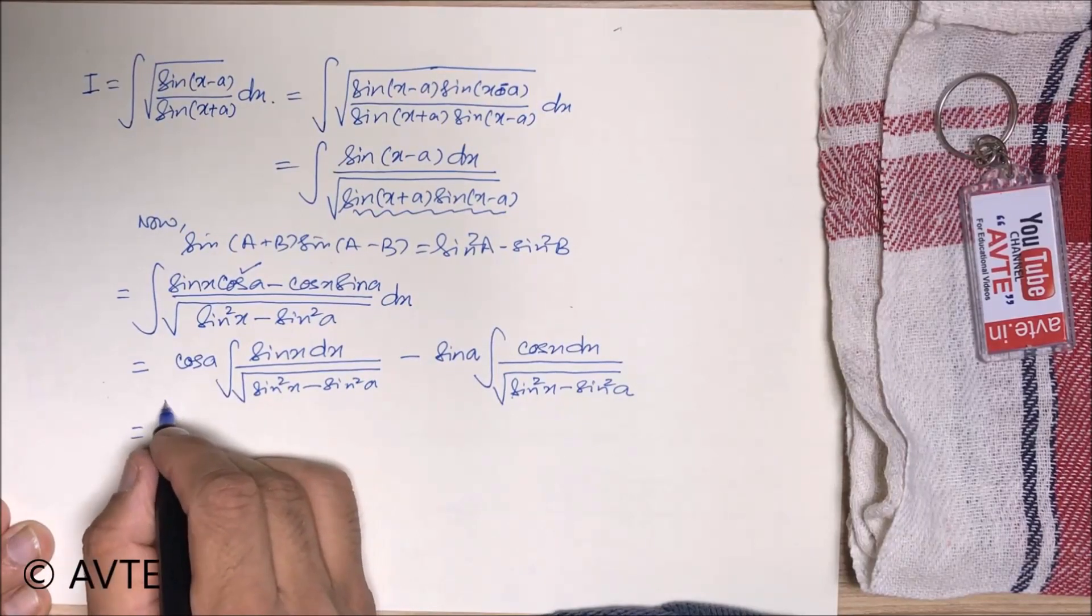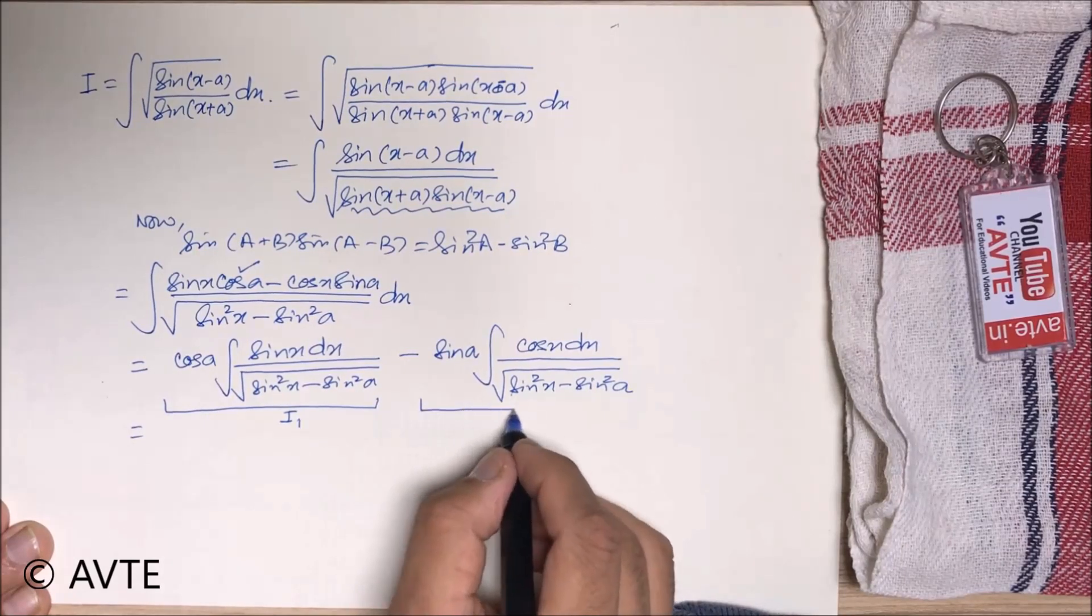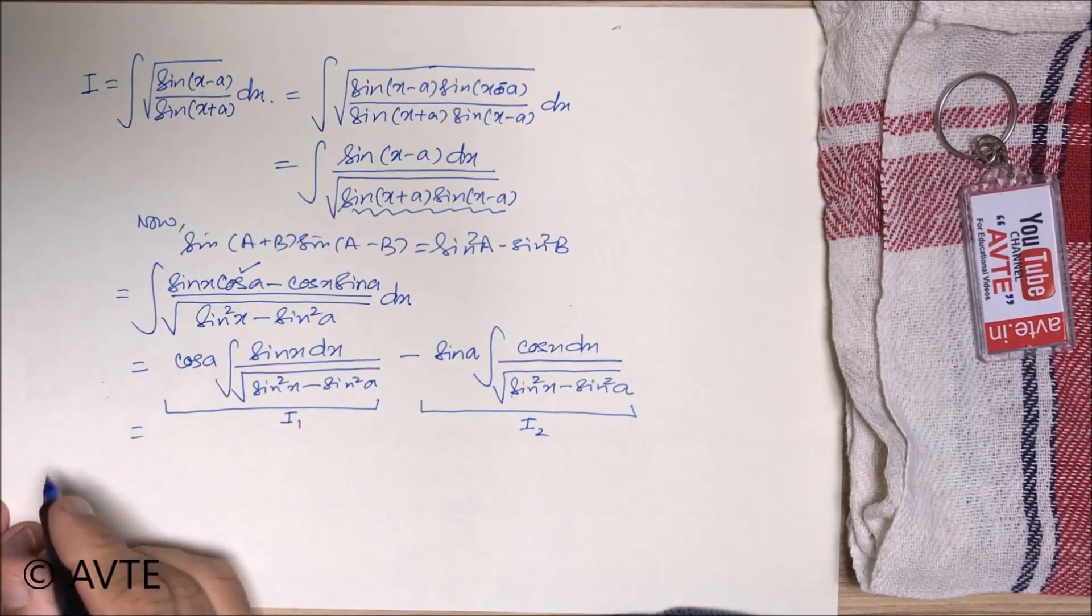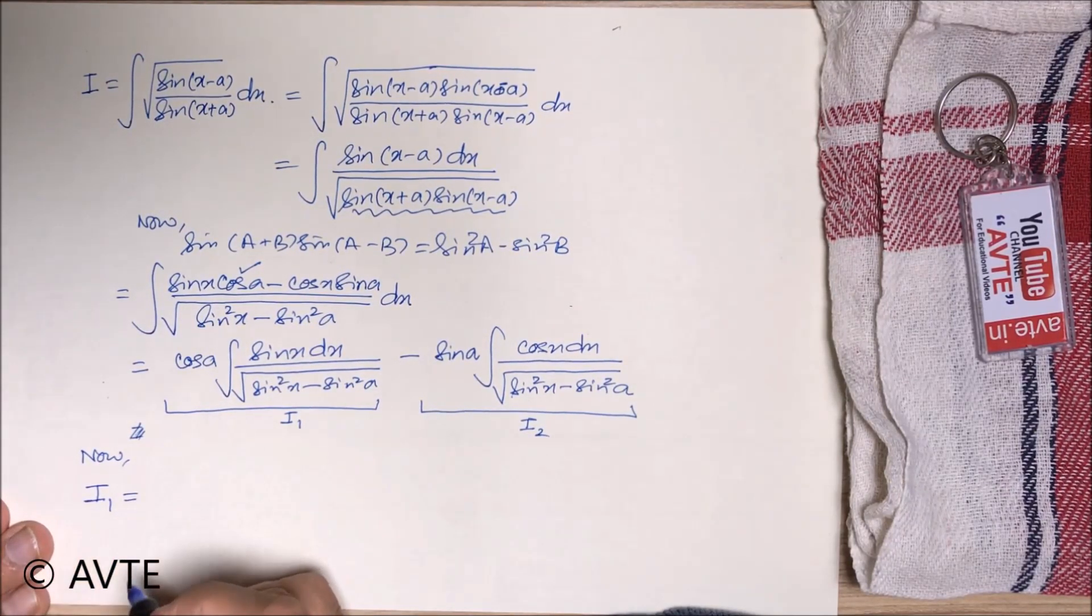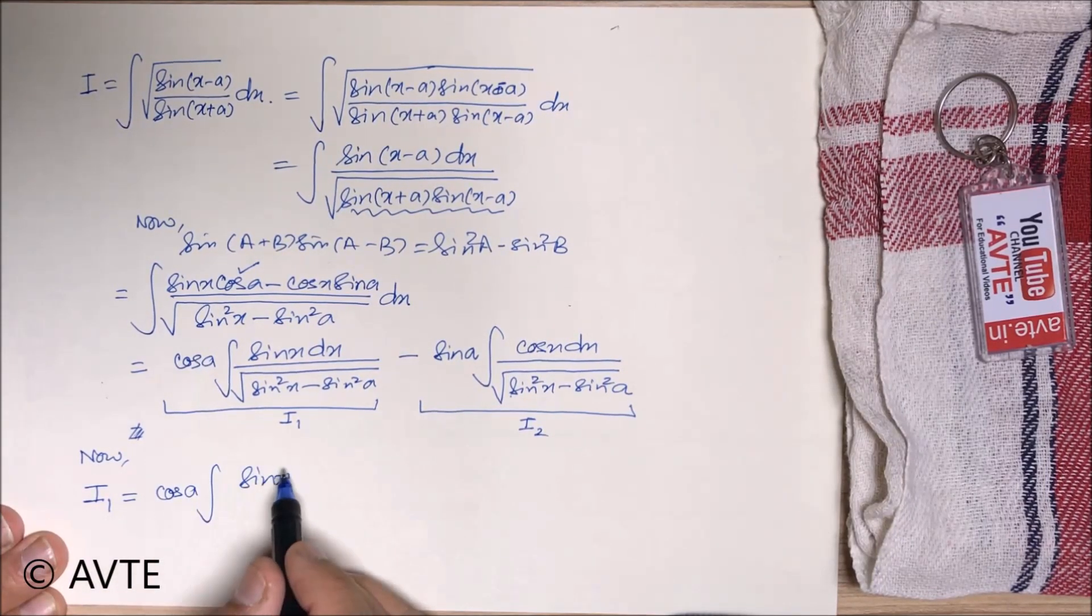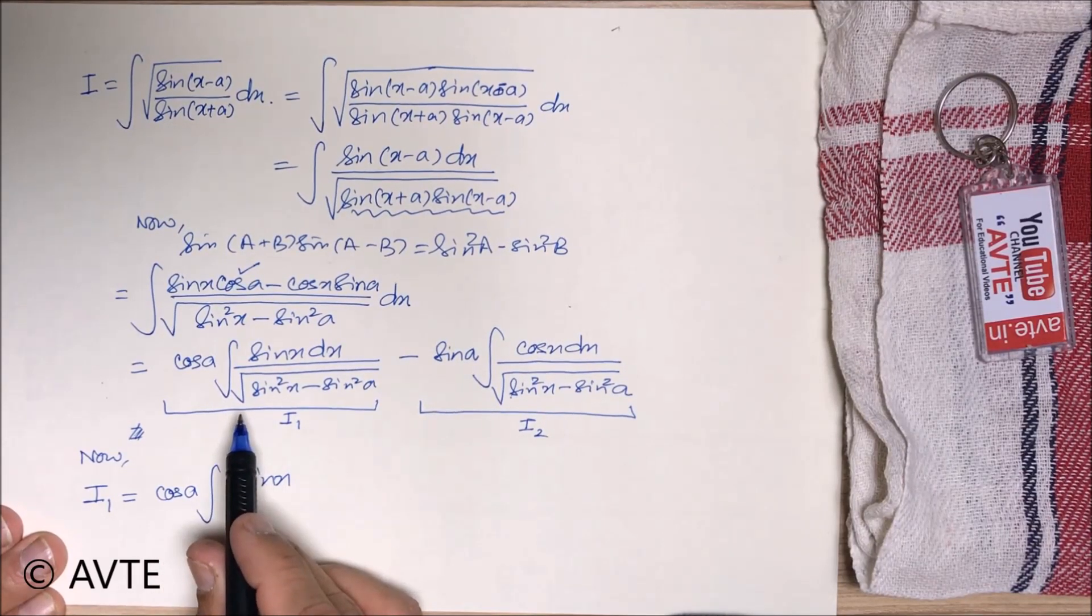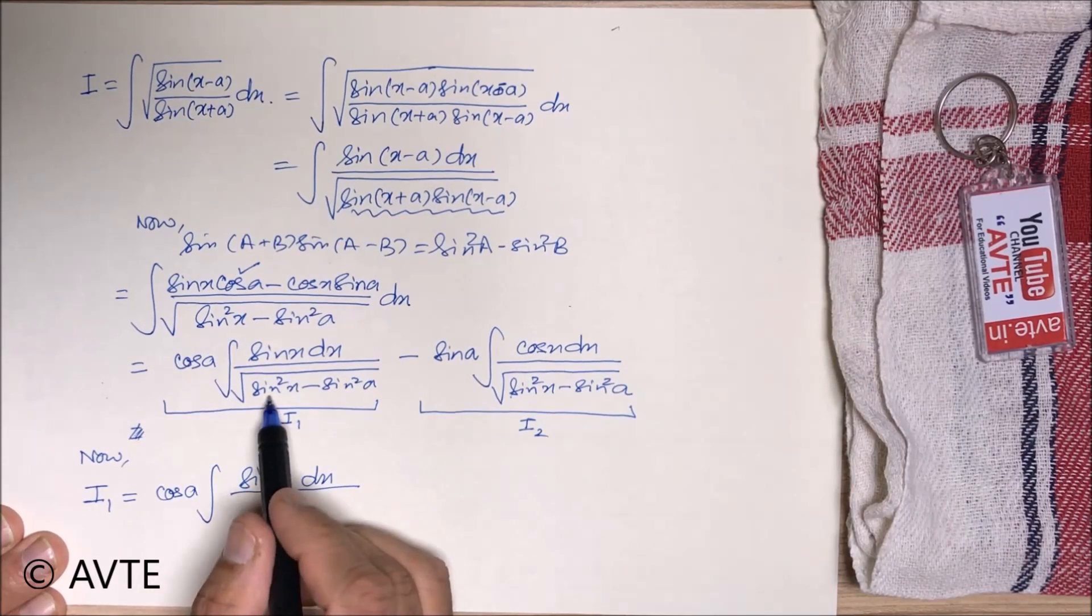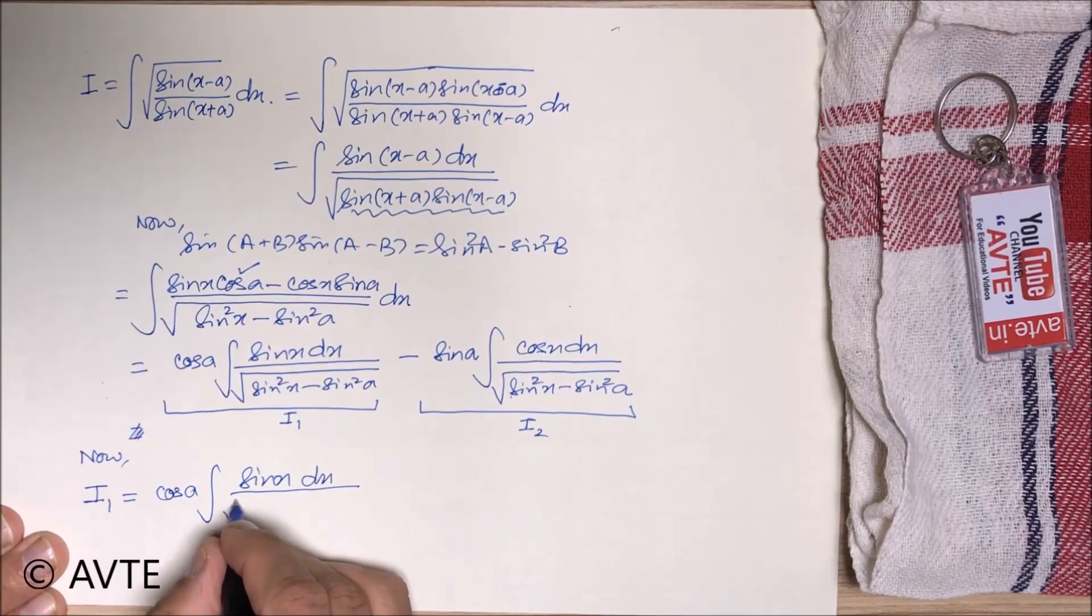Now I am taking this entire thing as i1 and this thing as i2. For i1 you can see that in the numerator we have sin x and in the denominator also we have sin square. So it is very important to convert sin squares to cos squares. So just see what I am writing.